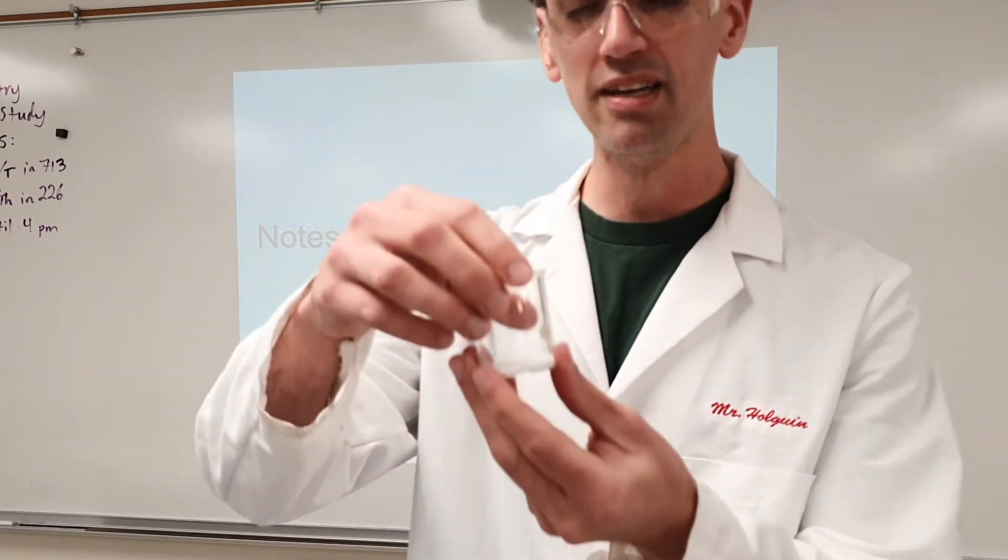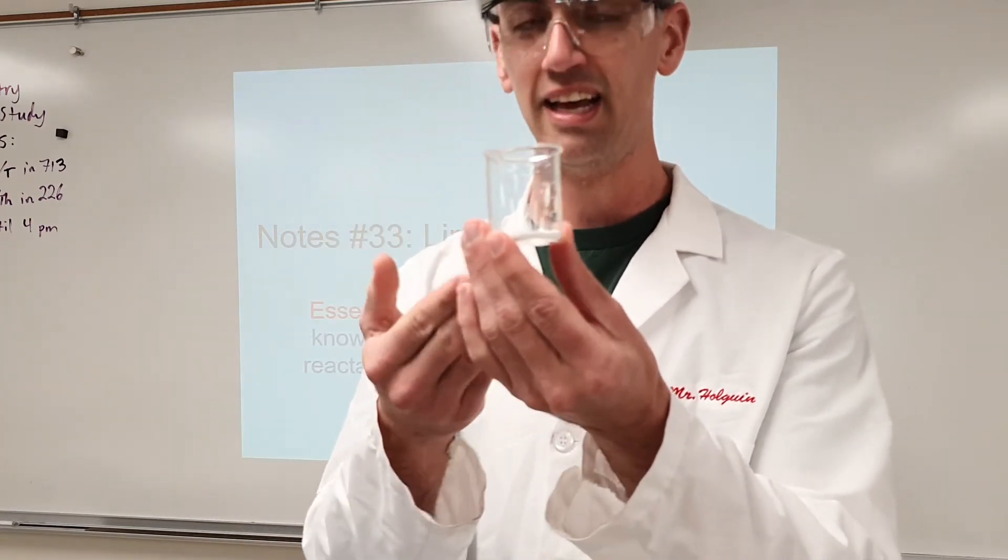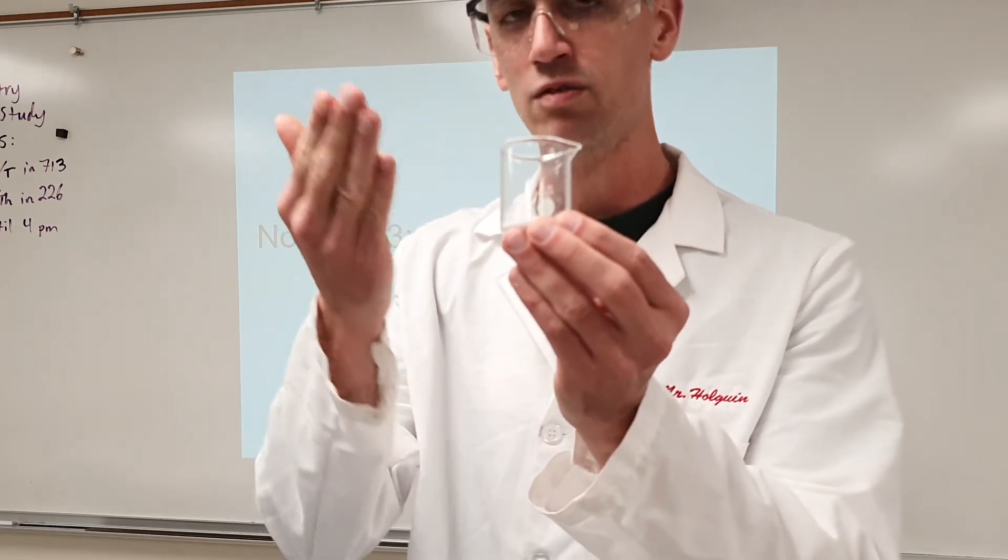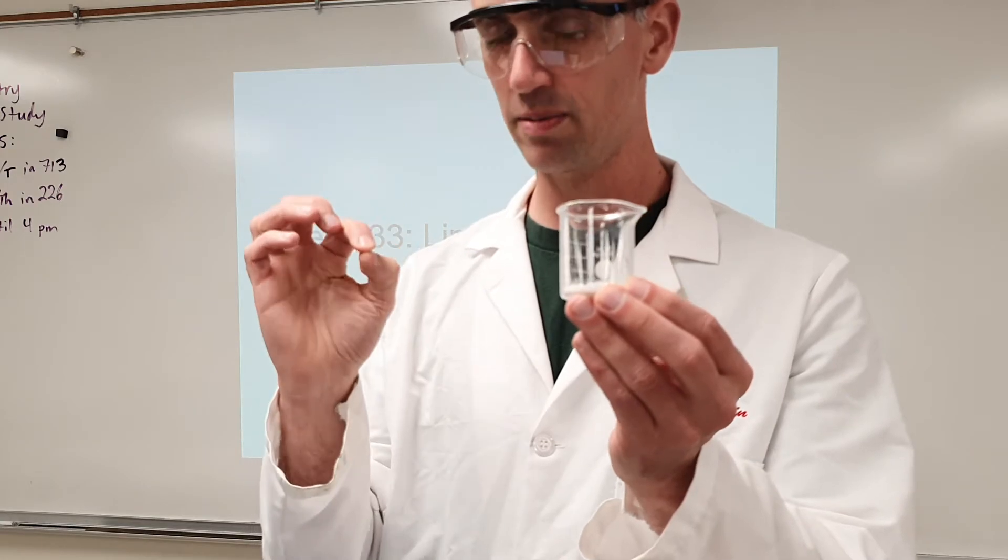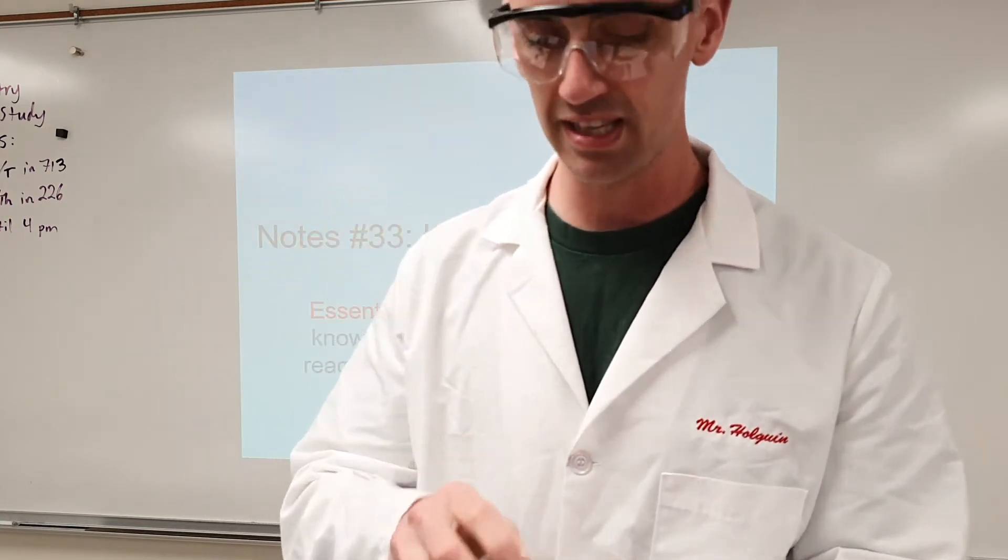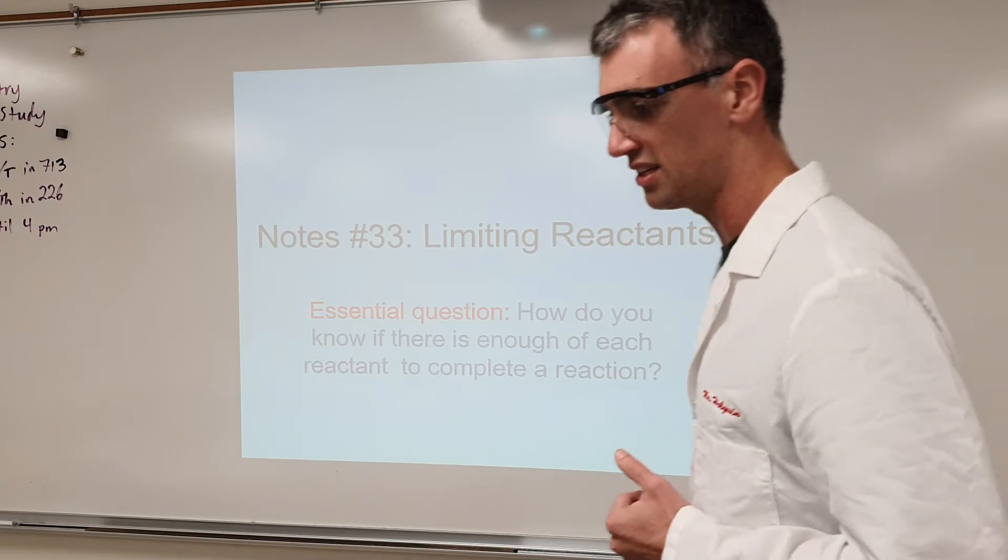So, in this case, now the baking soda is the excess reactant, and the acid is the limiting reactant. Because the acid ran out, and there was extra baking soda left over, whatever runs out is the limiting reactant. Whatever is left over is the excess reactant. That's the concept of what this is.